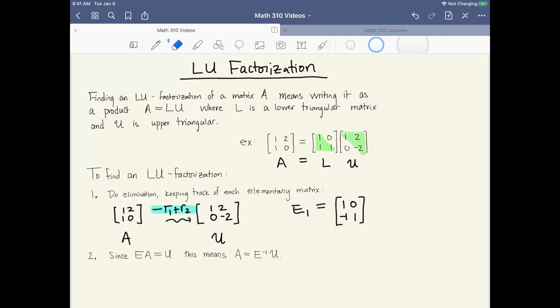For step 2 I want to observe that because EA gave me U, E in general will be a product of elementary matrices. In this case it was just one E that gave me EA equals U. This means that A can be written as E inverse U. And this E inverse is what's going to become our L. In fact with sensible enough row operations then I can assume that E inverse will be lower triangular.